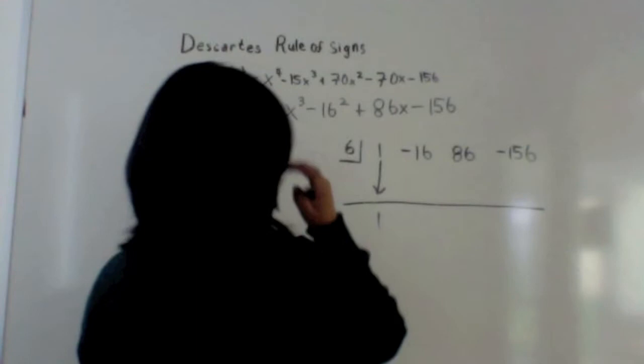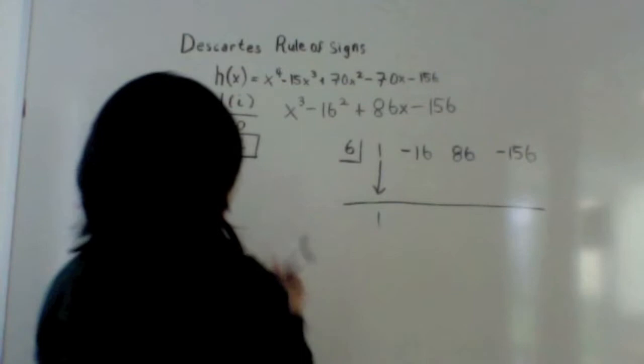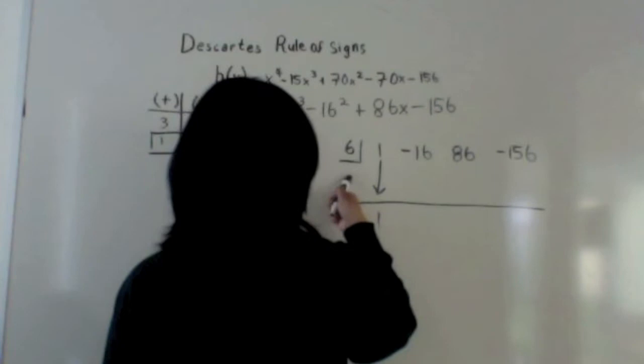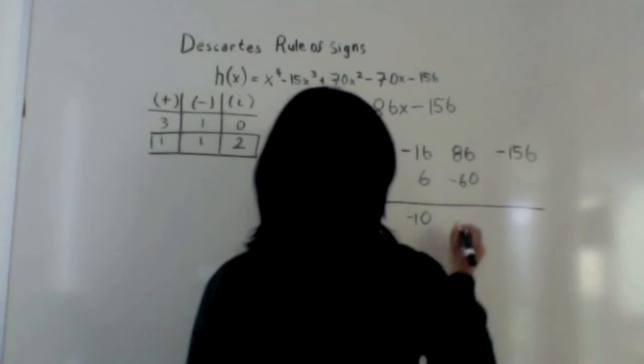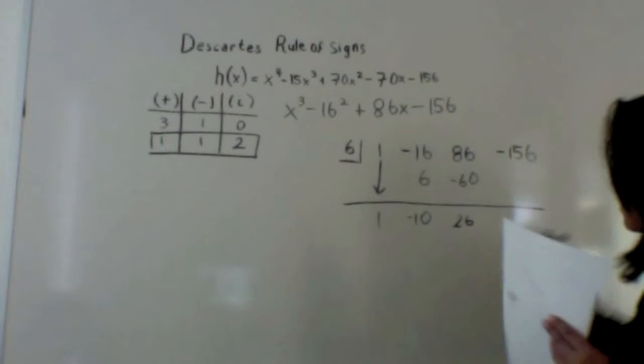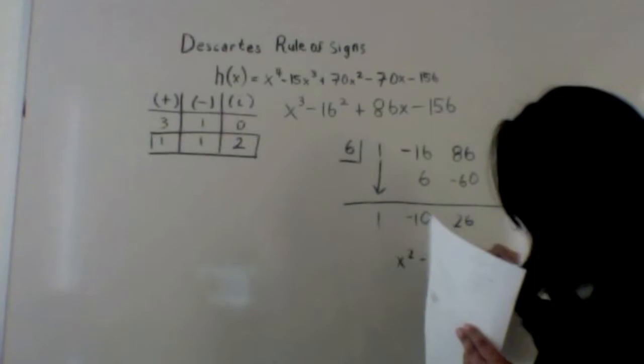Next, you need one positive zero, so plug in a positive number and do synthetic division again — in this case, 6. Bring down the 1 and multiply by 6 to get 6. Negative 16 plus 6 is negative 10. Times 6 is negative 60, which gives you 26. Multiply by 6 gives you 156, giving a remainder of zero. Result: x squared minus 10x plus 26.